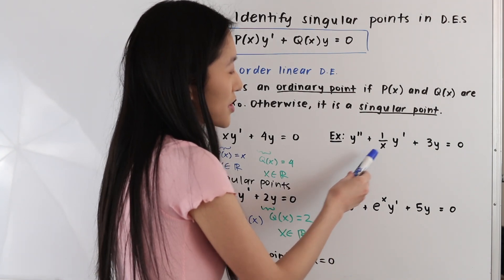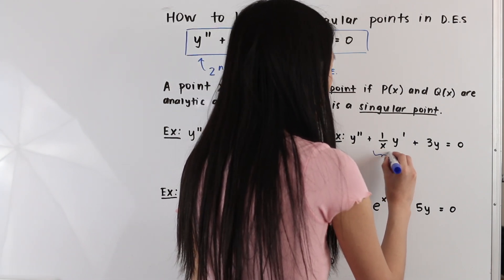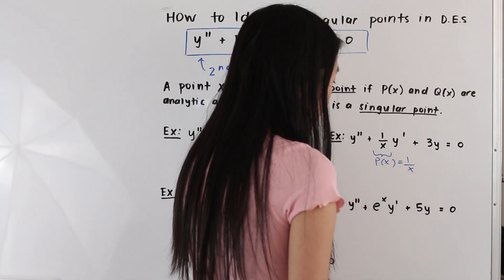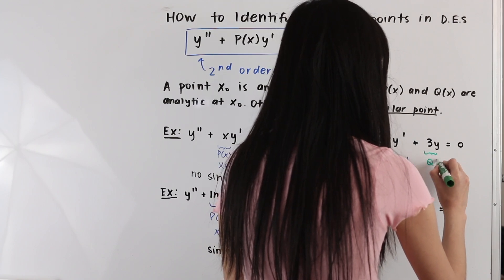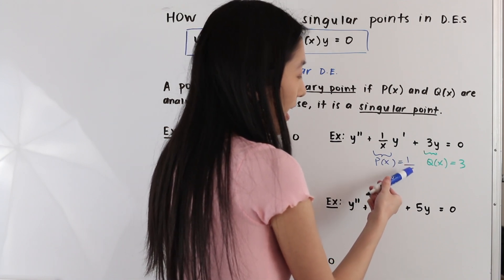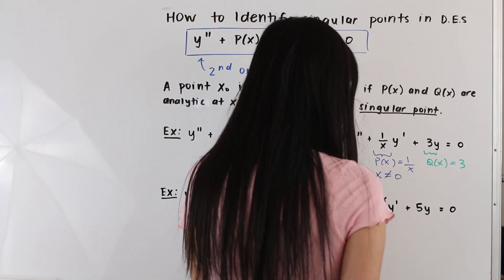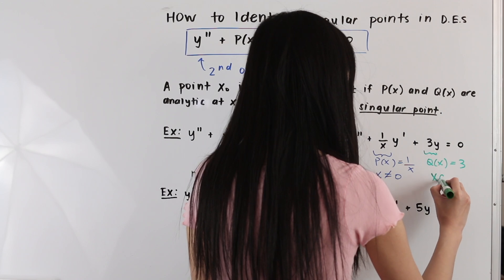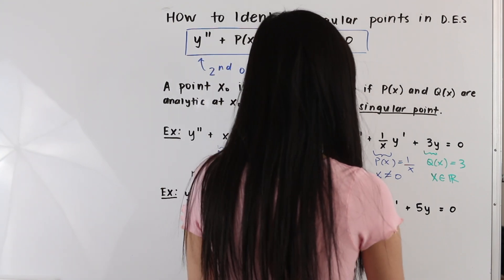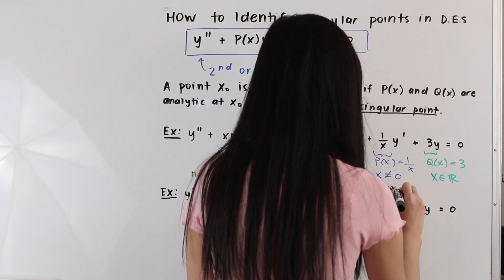Now let's look at the next example. We have y double prime plus 1 over x times y prime plus 3y is equal to zero. Here p of x is equal to 1 over x and q of x is equal to 3. We know that p of x is not defined at x equals zero — there is a vertical asymptote there, so x cannot equal zero. Since q of x is defined for all real numbers but p of x has a discontinuity at x equals zero, we have a singular point at x equals zero.